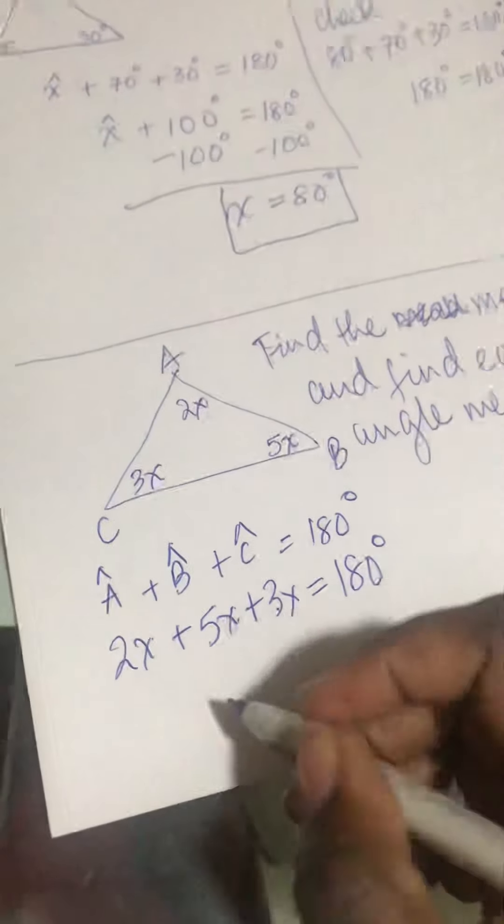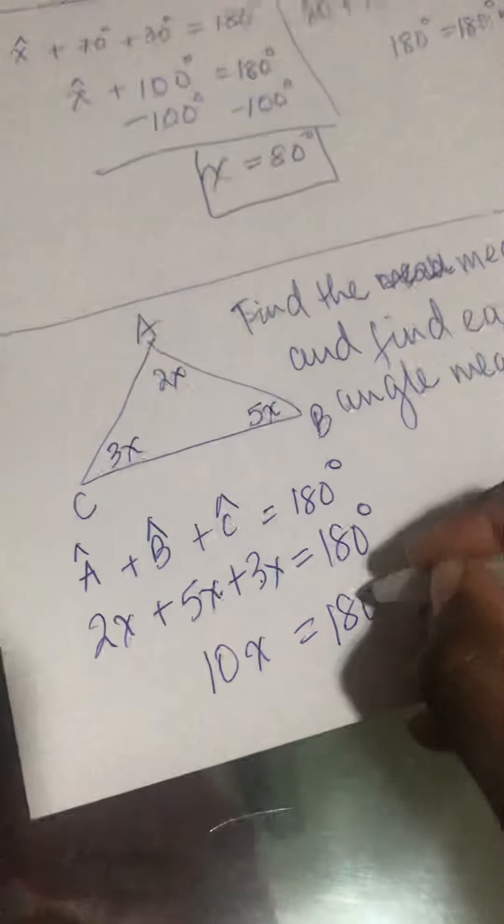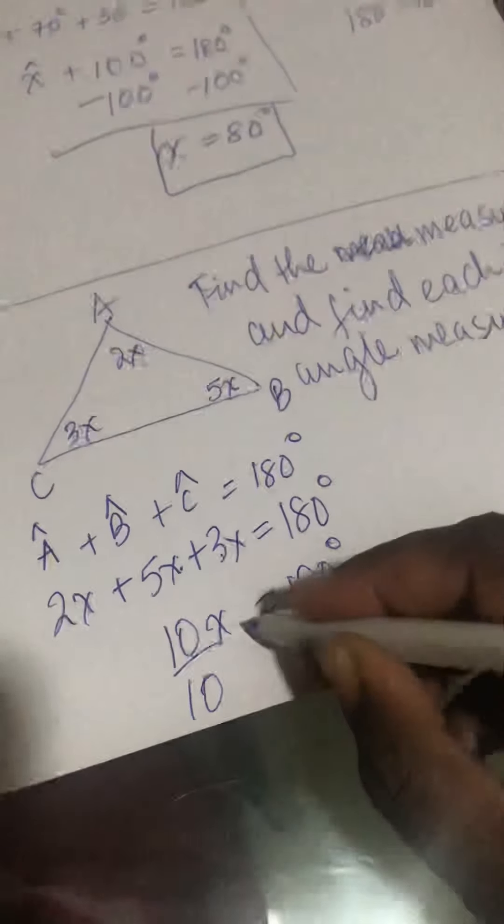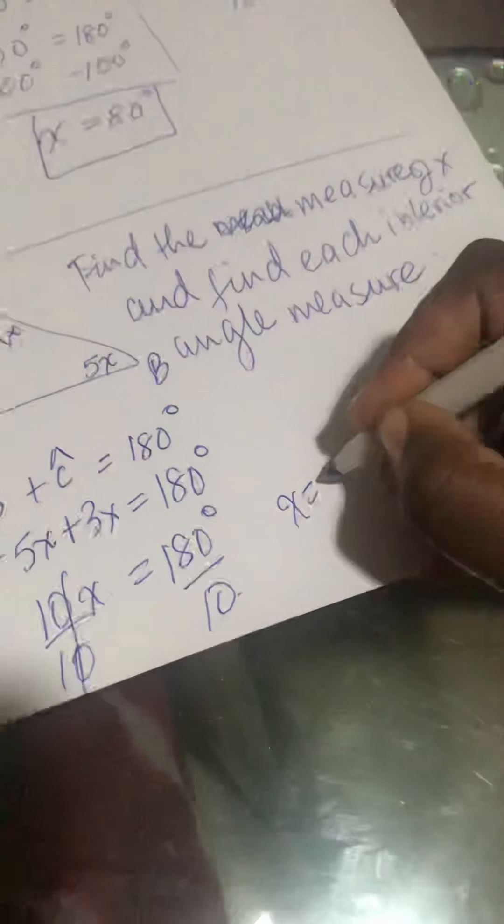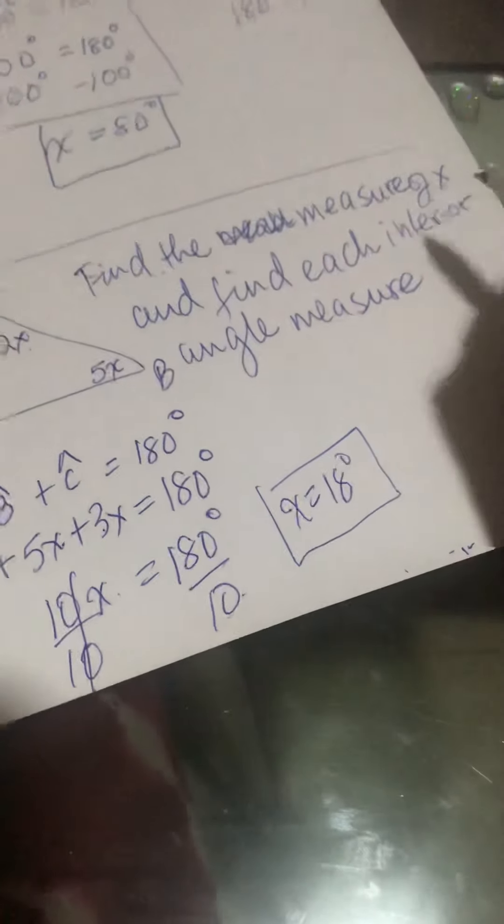7 plus 3 is 10, 10x equals 180 degrees. Divide both sides by 10. x is 18. x is 18, this is one of my answer for finding measure of x.